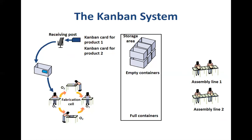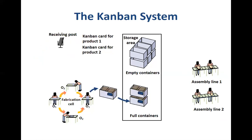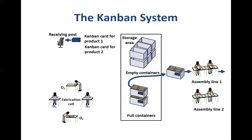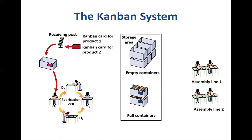That empty container is brought to the fabrication cell with the card on it. Once that empty container with a card arrives at the fabrication cell, that's a signal to start making the product. Once the fabrication cell finishes making the product, the full container is taken to the full containers area within the storage area. From there, that full container is brought to assembly line one, which processes these items and makes the final product. For product two, likewise a different colored card signals that product two needs to be made.